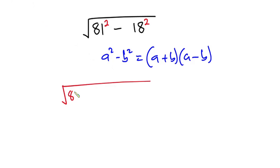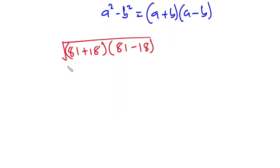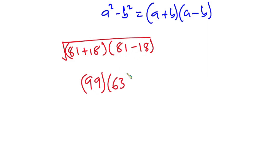So from here we have 81 plus 18, which is 99, and then 81 minus 18, which is 63. And we have our square root.